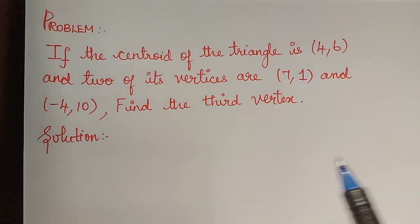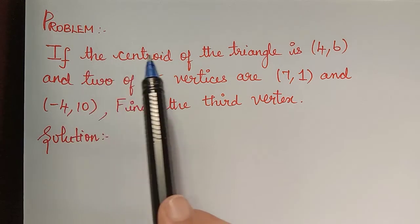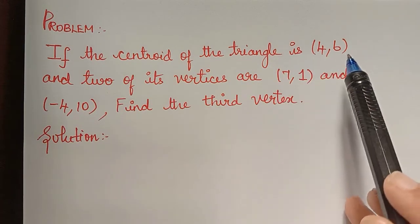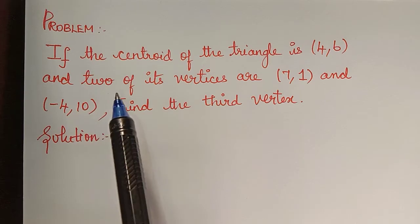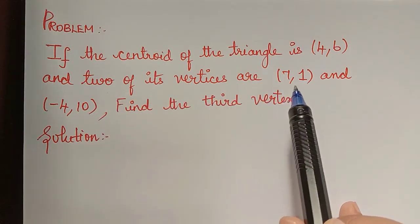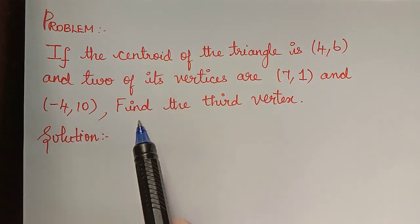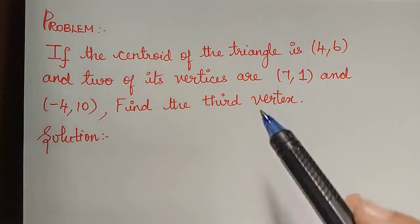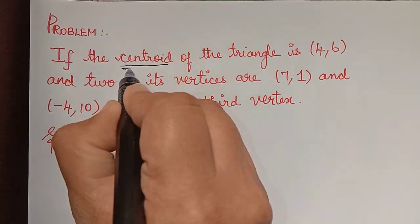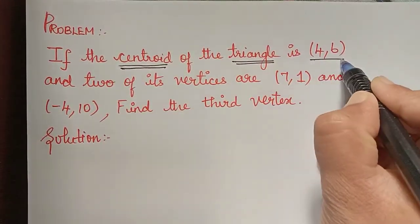Hello students. The next problem is: if the centroid of the triangle is (4, 6) and two of its vertices are (7, 1) and (-4, 10), find the third vertex. Here in this problem they have given us the centroid of a triangle to be (4, 6).